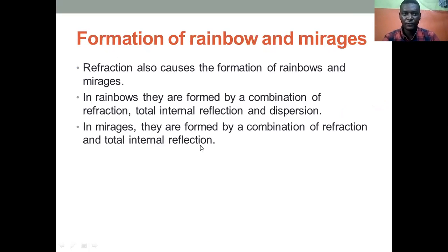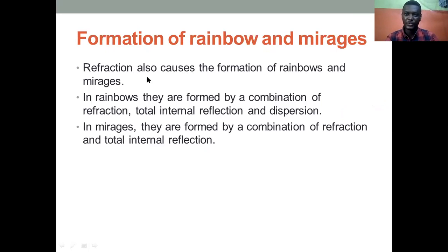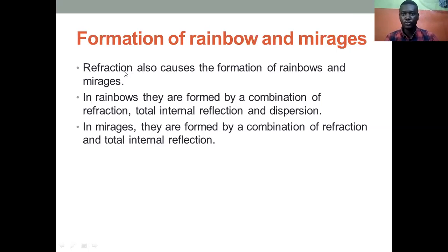Let's go to the last one — formation of rainbows. Refraction causes the formation of rainbows. Rainbows are formed as a result of three phenomena, not only refraction: first, refraction; second, dispersion of white light, which we will discuss in a later video; and third, total internal reflection. The actual cause of a rainbow is the tiny droplets of water hanging in the air, which form the optically denser medium. When light passes through those droplets, they disperse the light, and after dispersion there is total internal reflection, which comes out as a rainbow.